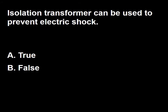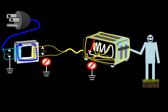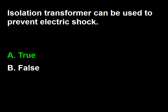Next question: isolation transformer can be used to prevent electrical shock — true or false? The benefit of ungrounded current is that when coupled with ungrounded equipment, a fault does not lead to an electrical shock. This benefit is lost if the equipment is grounded — in such a case electric shock will occur if a fault happens. So the answer is A — true.